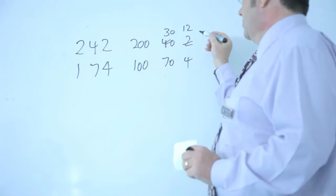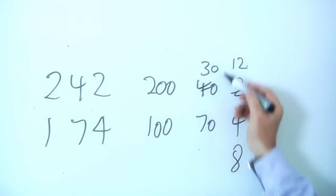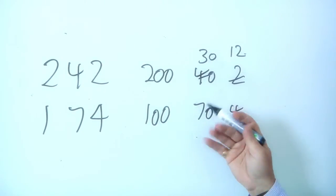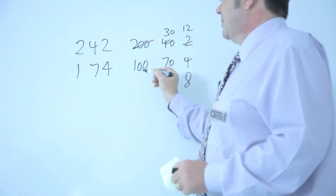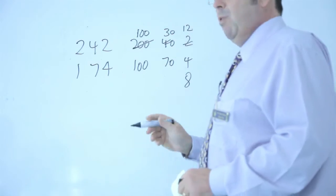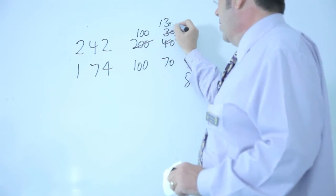I've borrowed in effect. So then I can do 12 minus 4 is 8, 30 minus 70. Ah, I need to decompose again. So I'll take my 200 and I will cross that out and I will say that is 100 and I'm going to make 30 become 130.